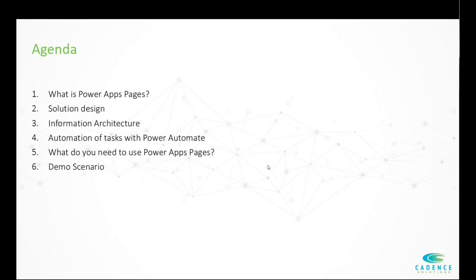We're going to look at our solution design. Today, we're going to be demoing a user requesting a specified document. They're going to access the portal, upload some form attachments, and then receive that requested document back to them via SharePoint. We're going to look at the information architecture we've designed for the solution, briefly, in SharePoint. The tasks we're going to be automating with Power Automate, which is a very powerful tool in the Microsoft environment. And then, what do you need in order to implement the solution in Power Apps Pages? Finally, we'll get into our demo.